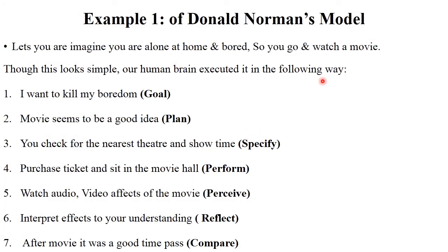Let's take one example of Donald Norman's model. Imagine you are alone at home and bored, so you decide to go watch a movie. The first step is your goal: you are bored and want to watch a movie — going to the movie is a good idea. The next step is specify: you check for the nearest theater and show time. Then perform: you purchase a ticket and sit in the movie hall.